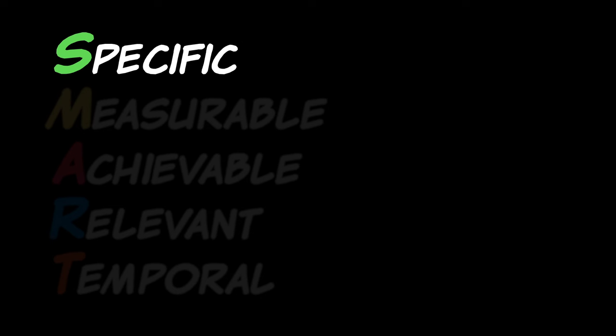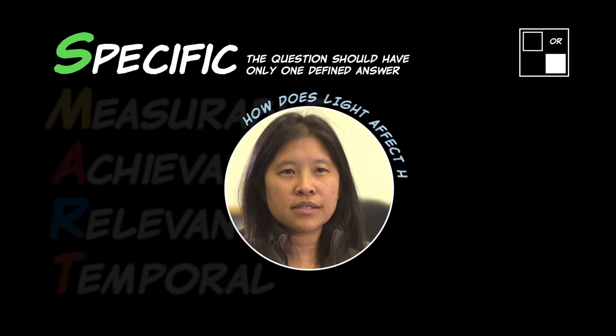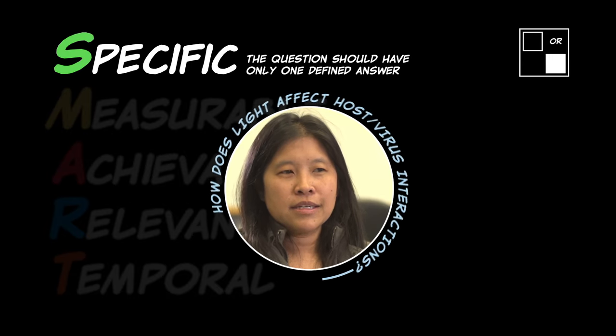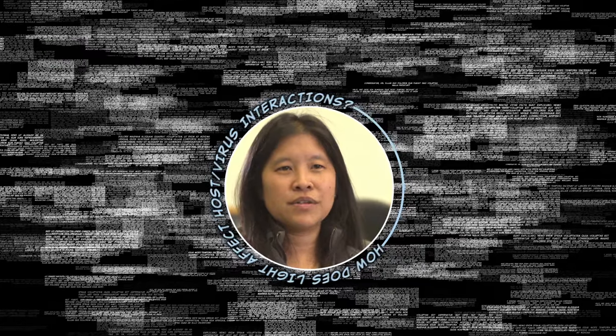Starting with S: Specific. For a question to be testable, it needs to be specific, meaning you should be asking a question that has one defined answer. This is why you can't just ask, 'How does light affect host-virus interactions?' — there are a million different ways to answer that with no defined answer. But if you ask, 'Does light affect host-virus interactions?' then your answer is either yes or no. That's specific.